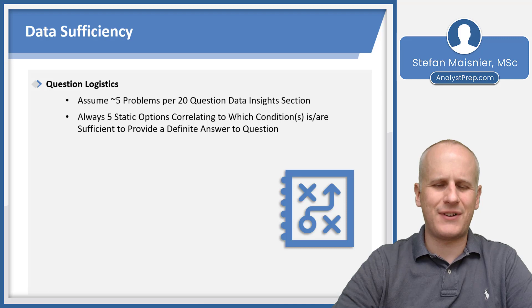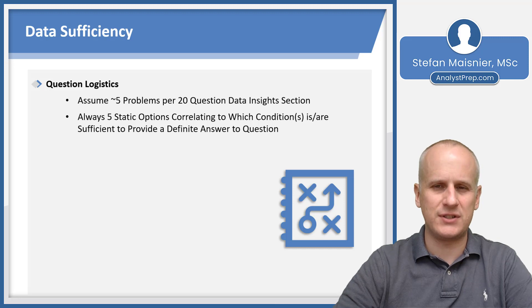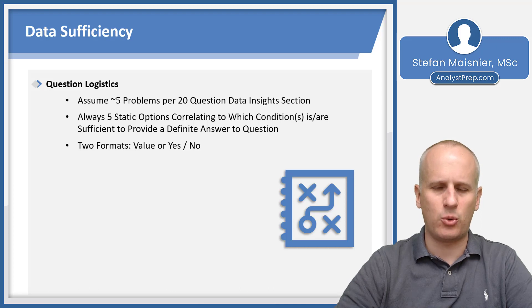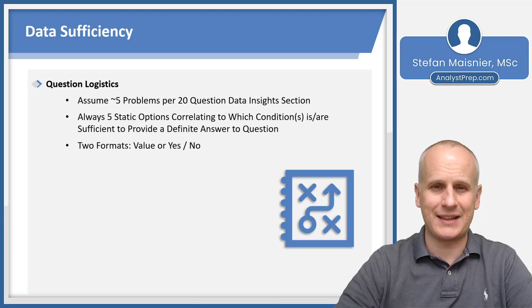There are always five static options correlating to which condition is, or which conditions are, sufficient to provide a definite answer to the question. So the answer choices for data sufficiency are always the same, and we'll go through them in detail here in this lesson. There are two formats of data sufficiency questions: ones that ask for a single value, and ones that ask whether the answer to the question is always yes or always no.